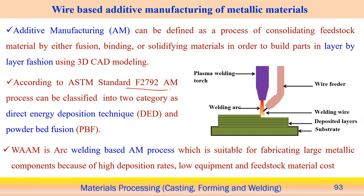Initially, the component size and shape must be designed using a CAD model. The deposition path, deposition strategy, and optimization of process parameters in the wire arc additive manufacturing process can then be determined. According to ASTM standard F2792, the additive manufacturing process can be classified into two different categories.